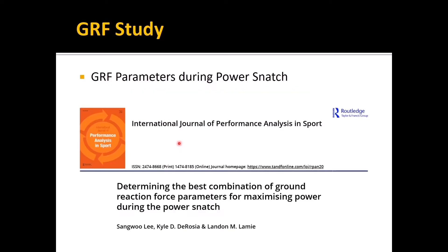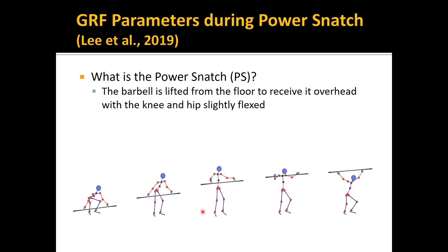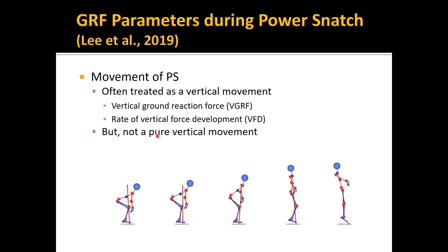Here is the first study, and the title of this study is determining the best combination of ground reaction force parameters for maximizing power during the power snatch. Let me define the power snatch first. The power snatch is that the barbell is lifted from the floor to receive it overhead with the knee and hip slightly flexed. This is a continuous motion of a power snatch.